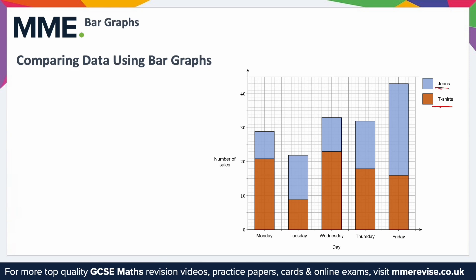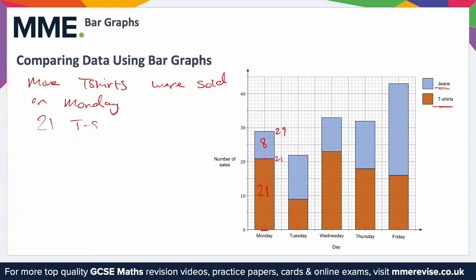The jeans is the blue and the t-shirt is the orangey brown. Reading off the t-shirts is straightforward because it's the section at the bottom of the composite bar chart — it starts at 0 and this bar finishes at 21, so on Monday there were 21 t-shirts sold. Reading off the number of jeans is trickier because you need to figure out where the bar starts and ends and find the difference. The t-shirt section ends at 21, and the jeans section ends at 29, so this must be 8 jeans. As a conclusion, more t-shirts were sold on Monday: 21 t-shirts versus 8 pairs of jeans.